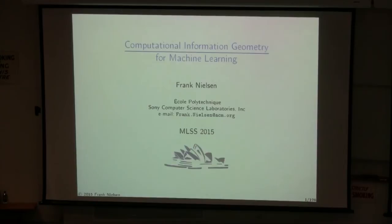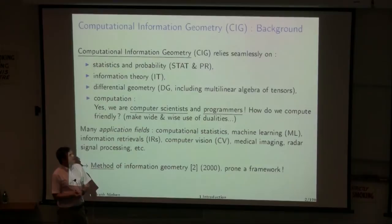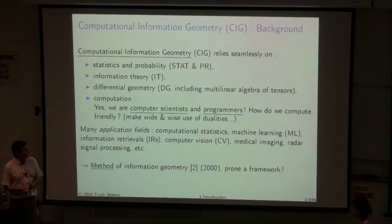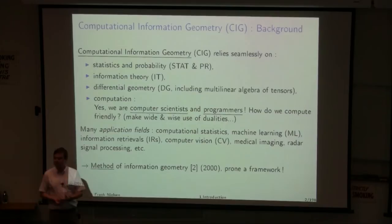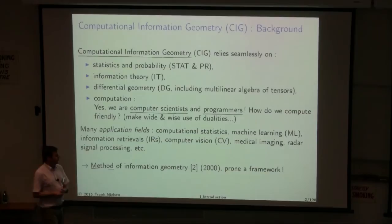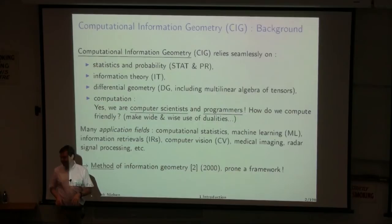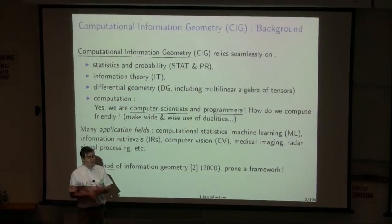So what is computational information geometry? It's three interleaved words and a framework that relies on several fields: statistics and probability, information theory, and differential geometry — especially in a more general setting than Riemannian. Many people are used to the Riemannian framework, and we will see that information geometry goes above those Riemannian things. We are also interested in computation for efficient programming using dualities between different concepts.